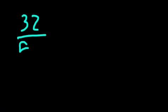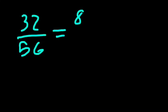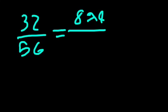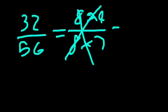First we need to simplify fractions, and this is basically like equivalent fractions. For example, you might have done something like 32 over 56. You need to find the common factor, which is 8. So we get 8 times 4 over 8 times 7, cross out the 8, and you just get 4 over 7.